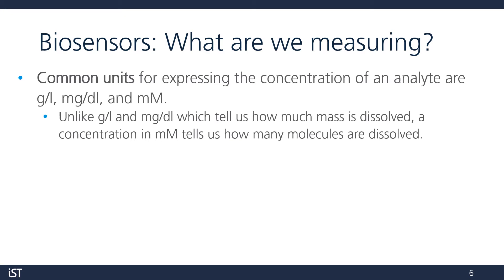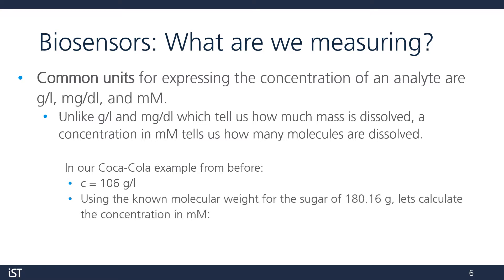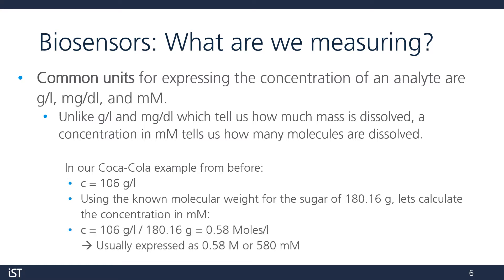Unlike grams per liter and milligrams per deciliter, which tell us how much mass is dissolved in our medium, a concentration in millimolar tells us how many molecules are dissolved. We can convert between the two pretty easily when the molecular weight is known. In our Coke example, our concentration was 106 grams per liter. The molecular weight of the sugar in our sample is 180.16 grams, so we can divide and express our concentration as 0.58 molar, or 580 millimolar.